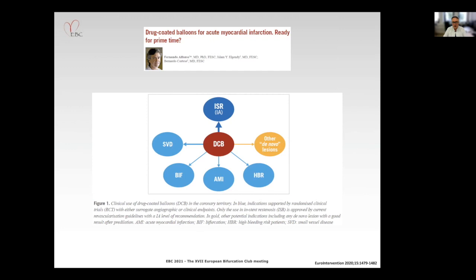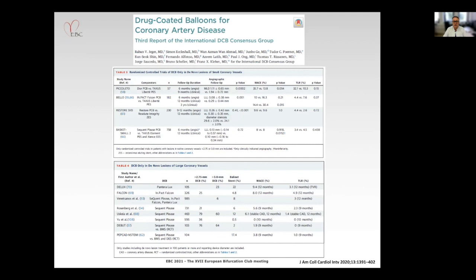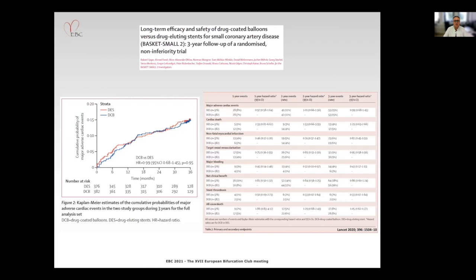What about de novo disease, which is not yet supported in the guidelines? We have several clinical scenarios for DCB: small vessels, acute coronary syndrome, patient with high bleeding risk, or bifurcation. From the consensus paper here, you can see an overview of the randomized trials on DCB only in de novo lesions and data supporting the use of DCB also in vessels from at least three millimeter diameter.